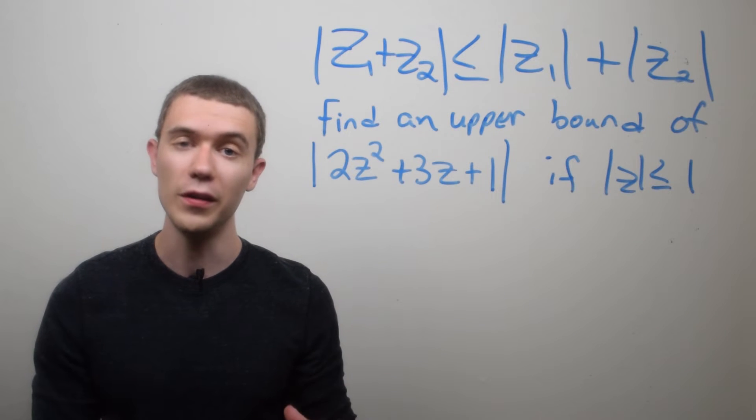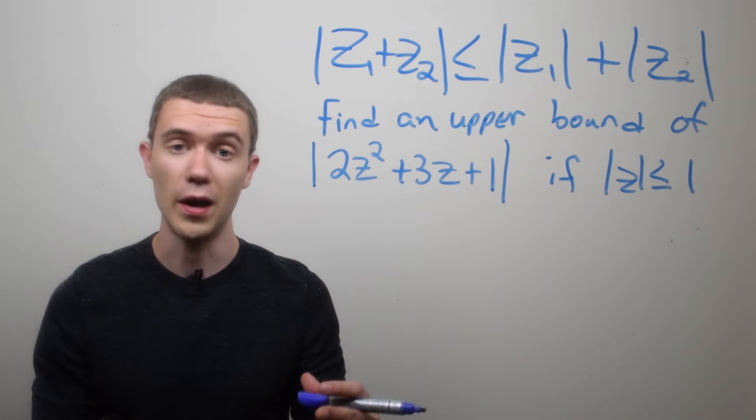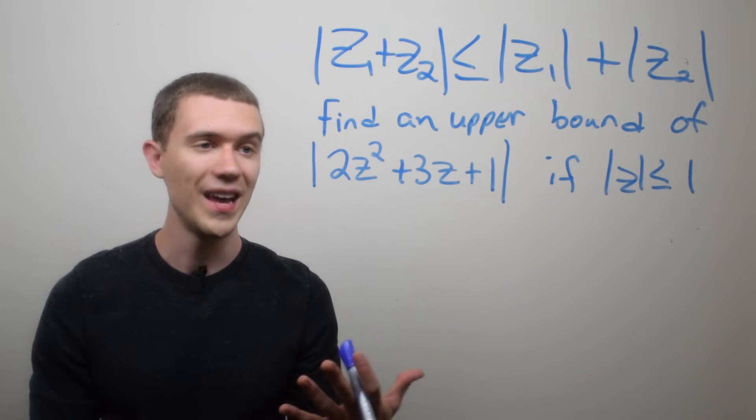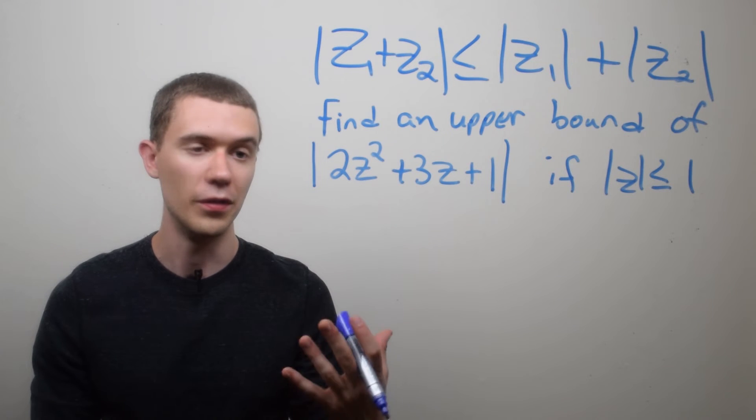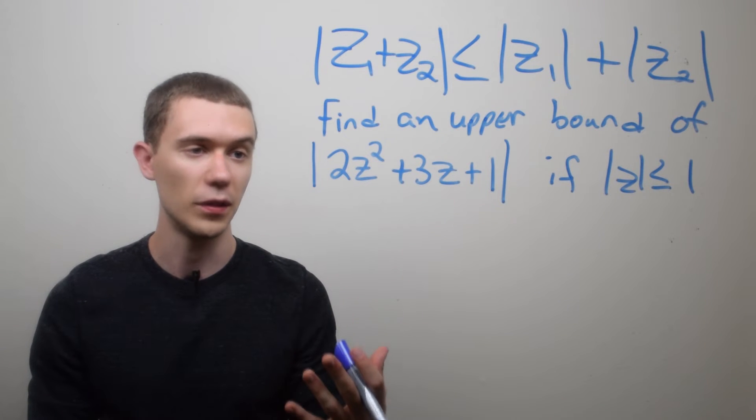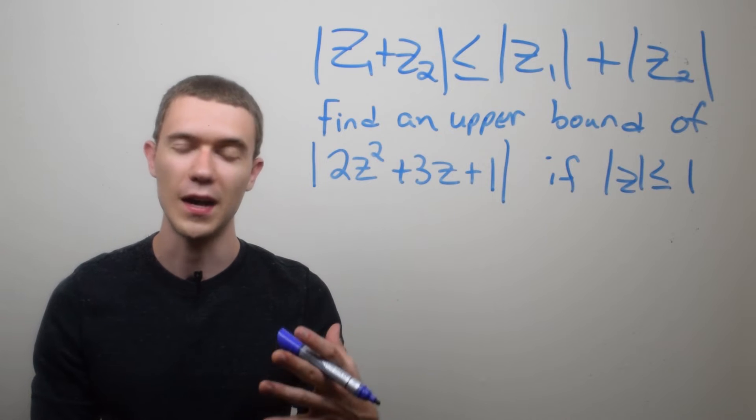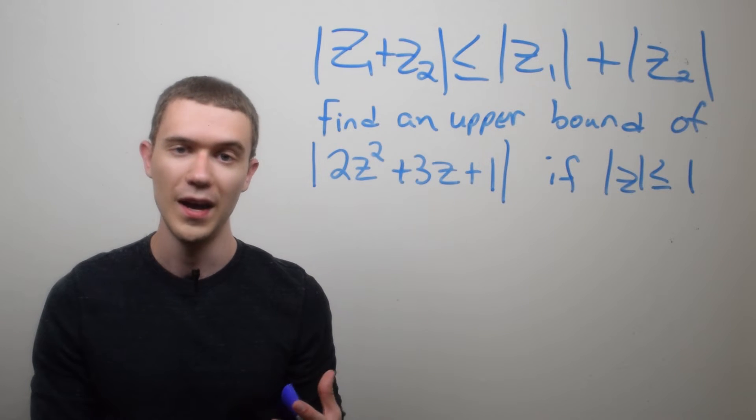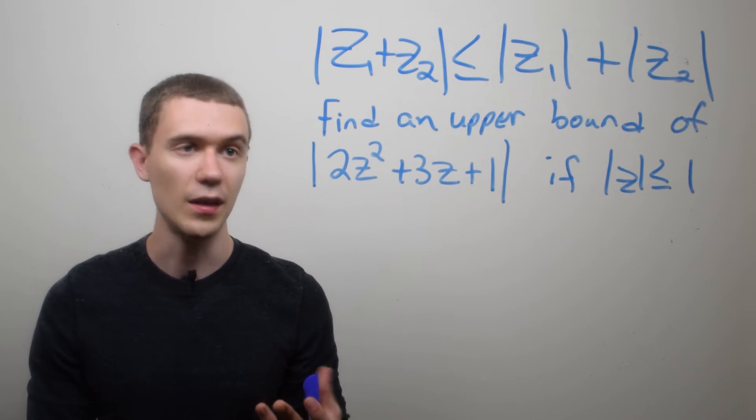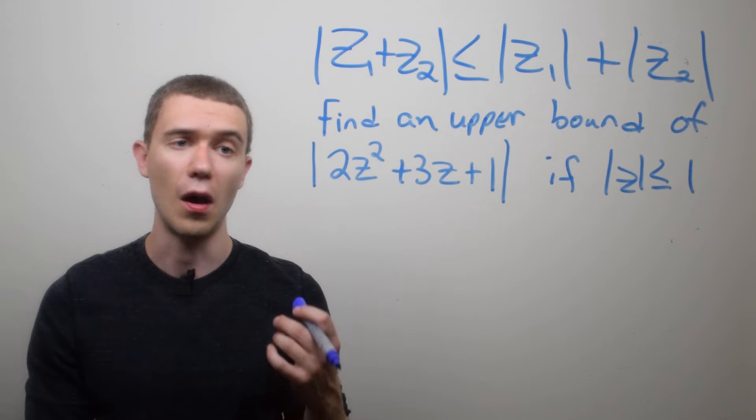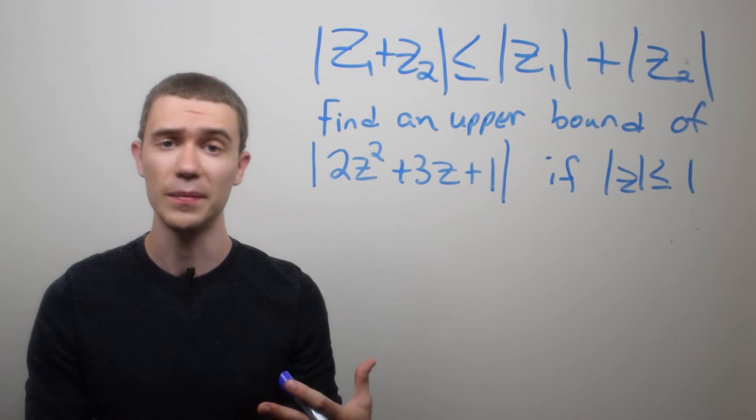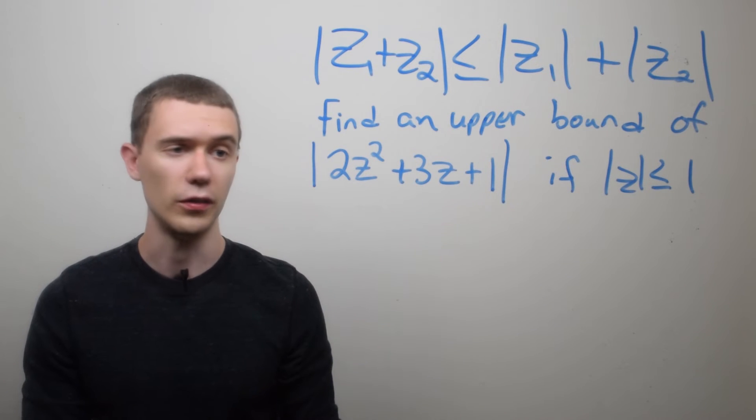So using the triangle inequality, I can find an upper bound for the modulus of a complex number. Here, I want to find an upper bound for this modulus, 2z squared plus 3z plus 1, knowing that the modulus of z has to be less than or equal to 1. Now, I don't know anything about z necessarily, but I can figure out an upper bound for this, how big this modulus could be, using the triangle inequality.